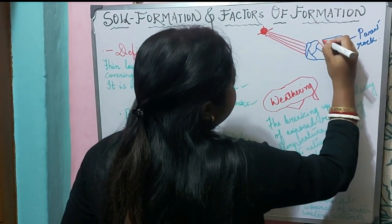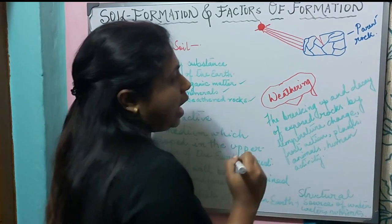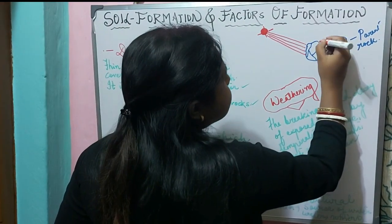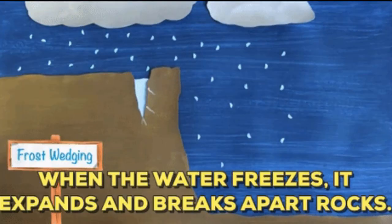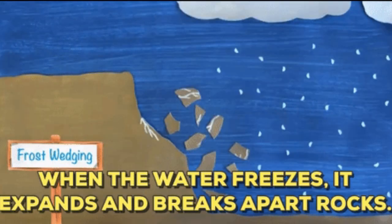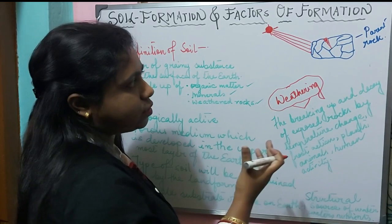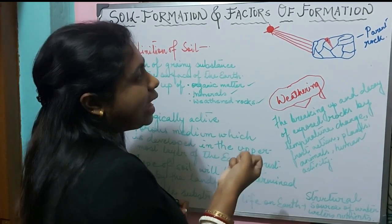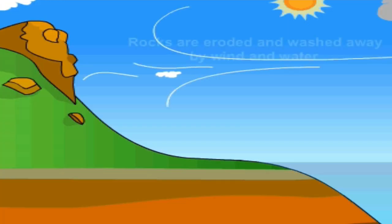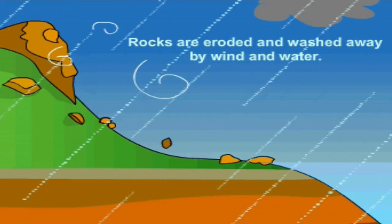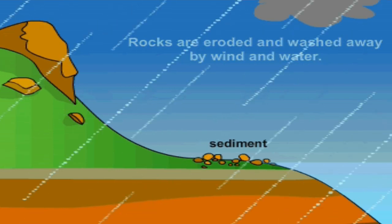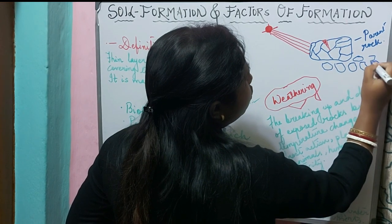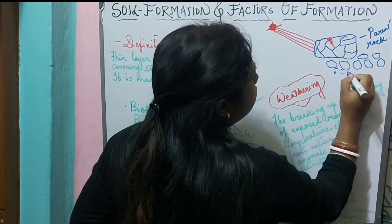Due to expansion and contraction, we will notice there is a crack in the rocks. This crack gets filled up with water when it rains heavily, and this rainwater gets frozen — we can say it turns into frost. As it freezes it causes expansion of the rock, and due to the expansion this larger piece of rock gets broken into smaller pieces.